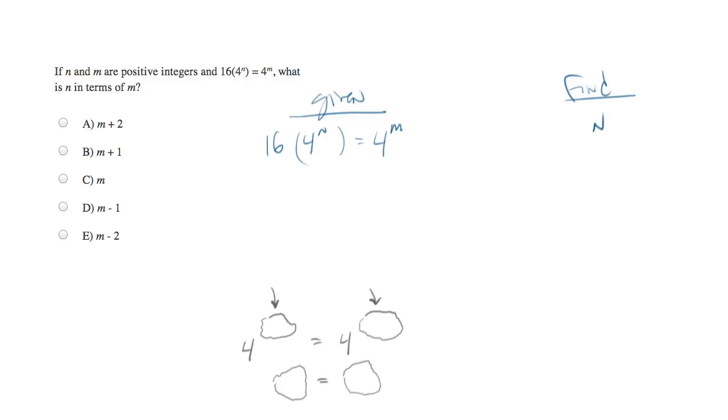In the equation that we've been given, you can see that we have two sides of an equation. But the base on either side does not equal each other. On the right, we have a 4. And on the left, we have a 4. But all of that's multiplied by 16, which isn't going to work.